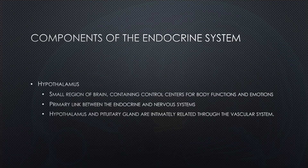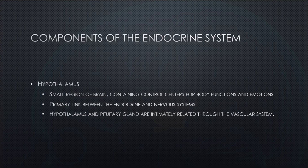First up, we have the hypothalamus. The hypothalamus is a small region of the brain that contains several control centers for body functions and emotions. It's the primary link between the endocrine system and the nervous system. The endocrine system has a connection to the nervous system known as the hypothalamus, and it produces regulatory hormones controlling the release of hormones by the pituitary gland.